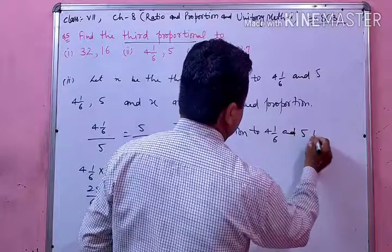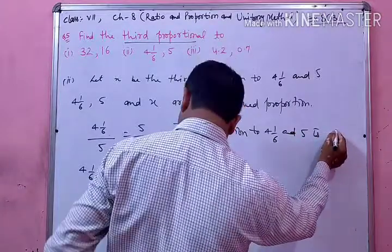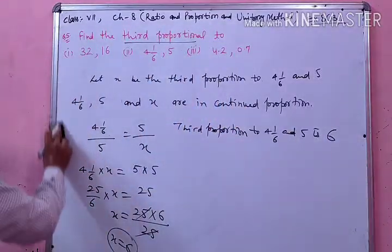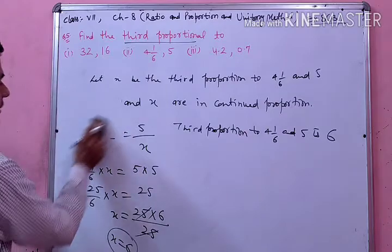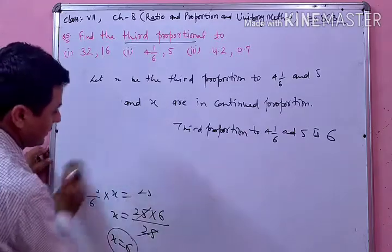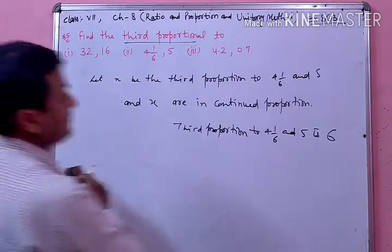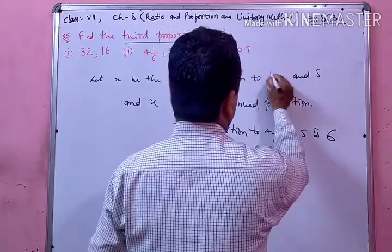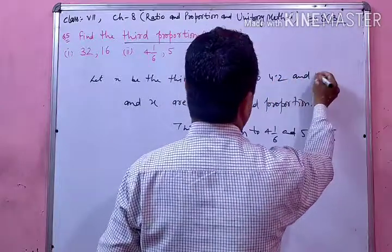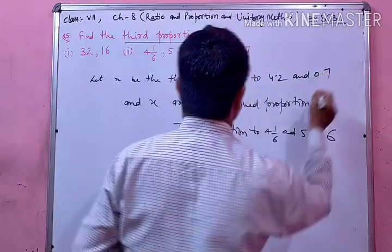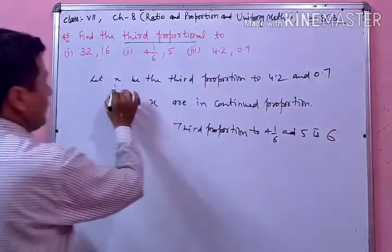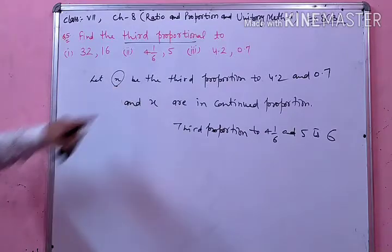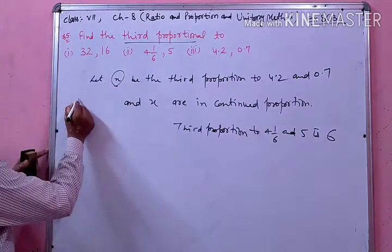तो इस तरह से third proportion of 4 and 1/6 and 5 होगा 6. इसी तरह से third part करना है। Third part के अंदर given है: 4.2 और 0.7. हमें third proportion find करना है, तो उसको let x किया है।